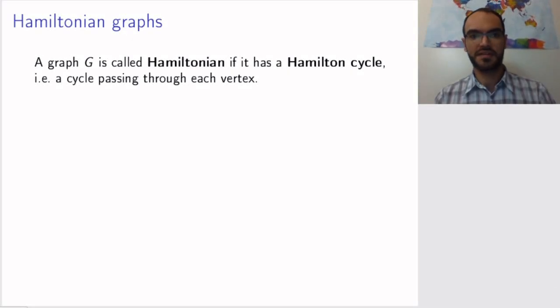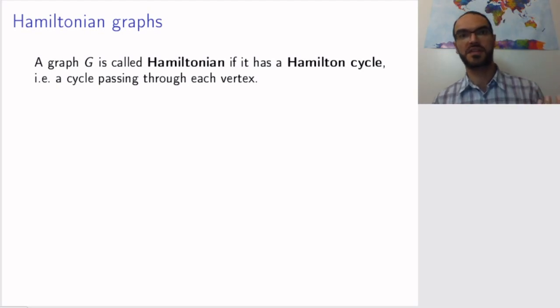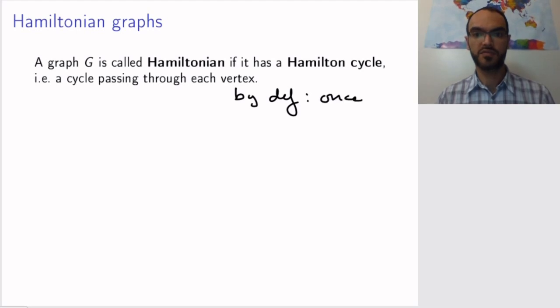Another thing that a graph can be or not be is Hamiltonian. We call a graph Hamiltonian if it has a Hamilton cycle. This is a cycle that passes through each vertex. Since it is a cycle it cannot pass through vertices multiple times, so by definition it will pass through each vertex exactly once.